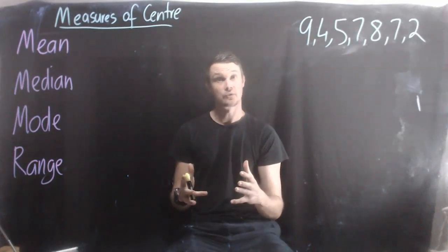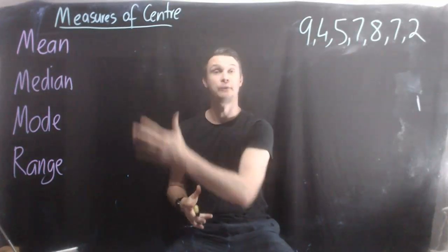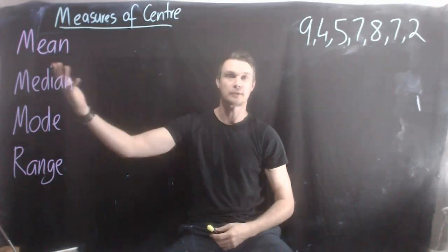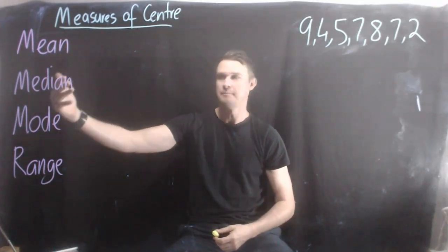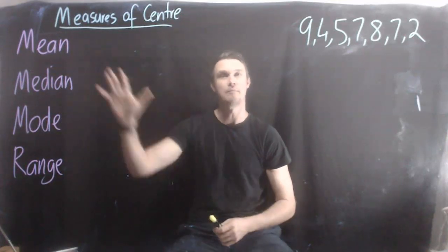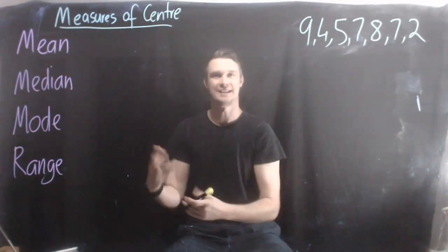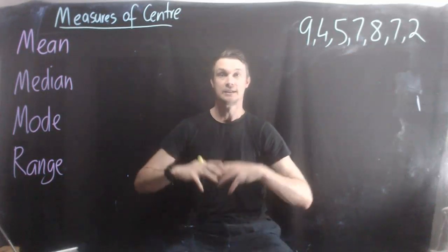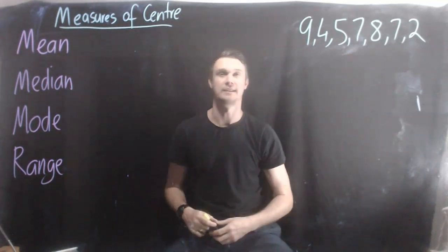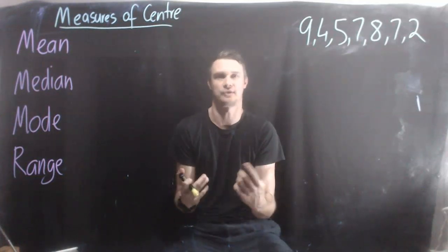In this series of videos, we're going to be looking at these four things, and this will do with statistics. The four things we're going to be looking at are mean, median, mode, and range, and we call these our measures of centre. It's how we use statistics to help us analyse and evaluate our data, and these four things help us give a measure of centre.